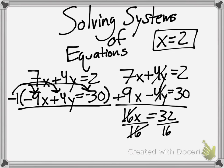Now, we're going to take our x value and just put it into one of our equations. It could be either one. I'm putting it into 7x plus 4y equals 2. So, I'm going to put in 7 times 2 plus 4y equals 2.